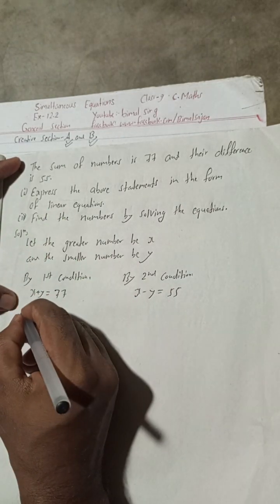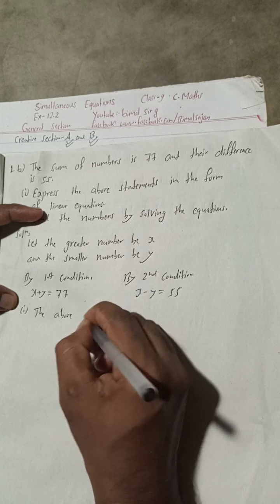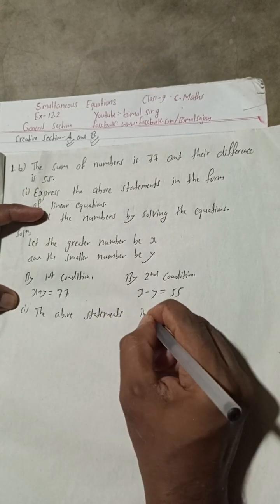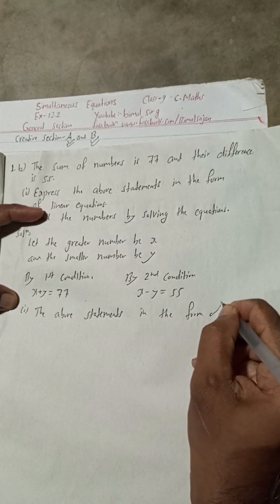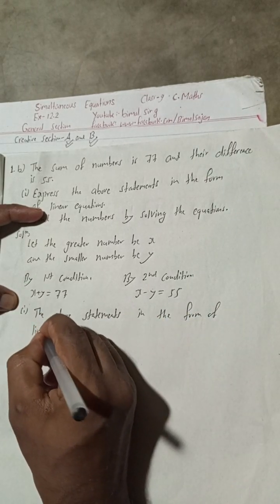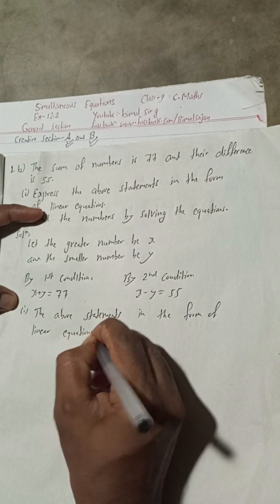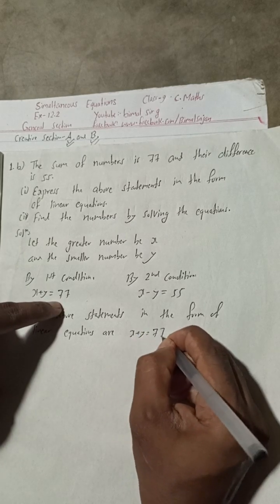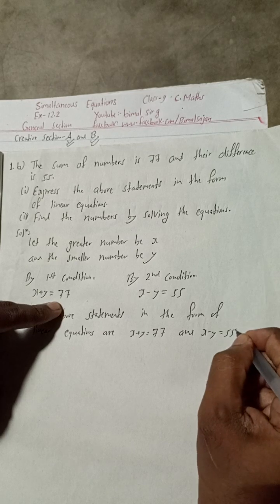Now, the above statements in the form of linear equations are: x plus y is equal to 77 — this is equation one — and x minus y is equal to 55 — this is equation two.